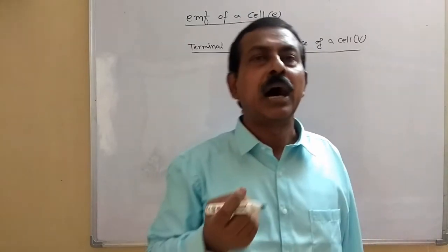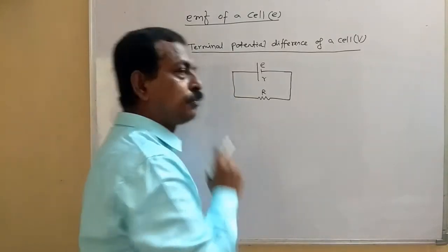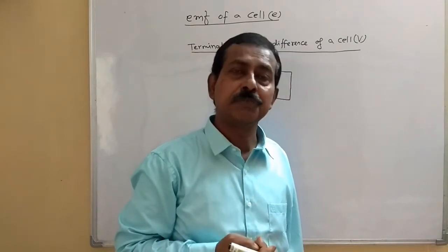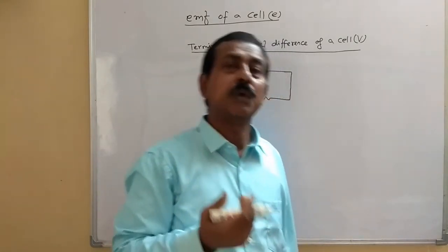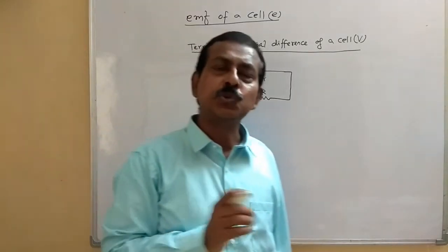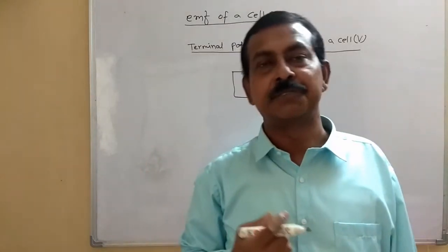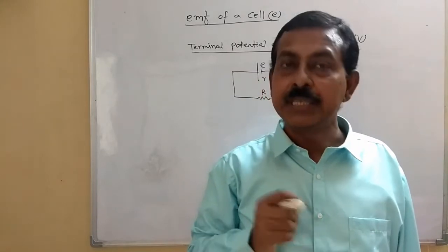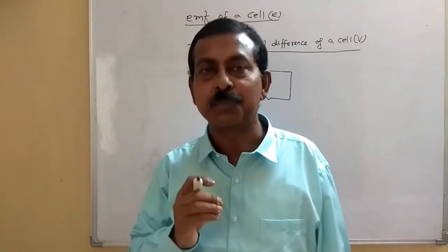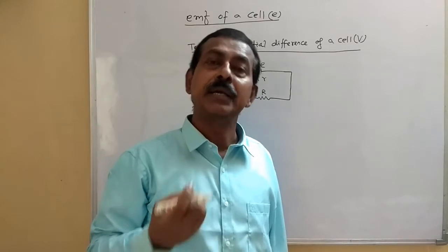Let's see how these two are related to one another. You might be doing EMF and terminal potential difference separately for the first time, because up to class 10 we never talk about these two terms separately. Whatever we took as the EMF of a cell, we also took as the potential difference. The reason is that up to class 10, whatever cells we considered were taken as ideal cells, meaning they do not have any internal resistance.